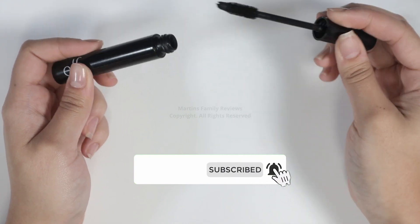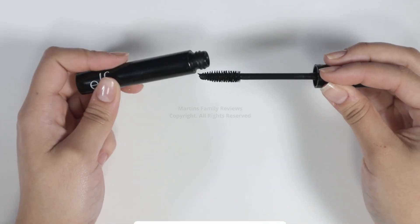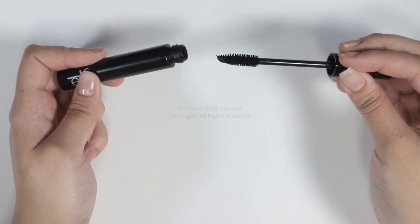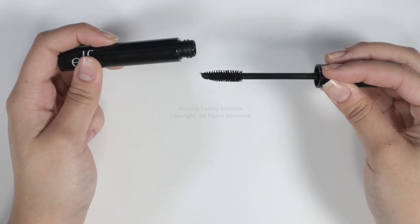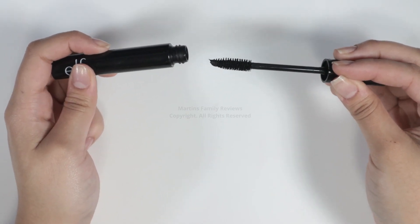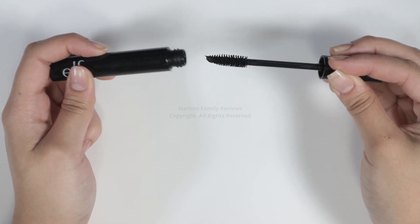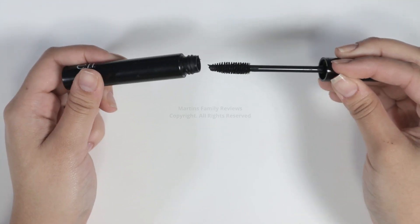That wand is a perfect shape, so you get a small narrow shape for the inside corner of your eye and that bigger shape to get that volume on the outer and middle of those lashes. It is honestly great.